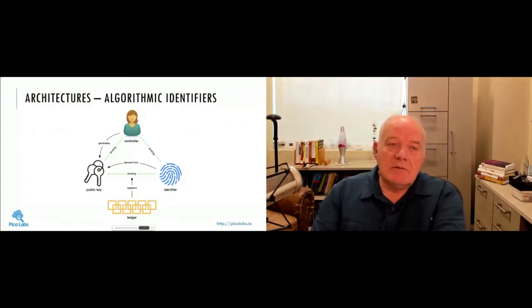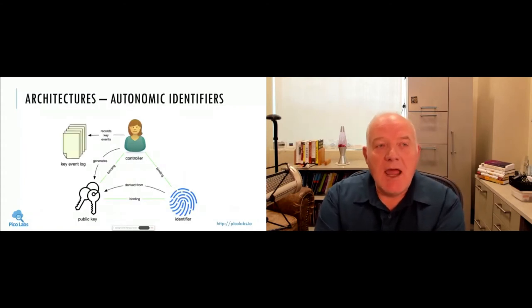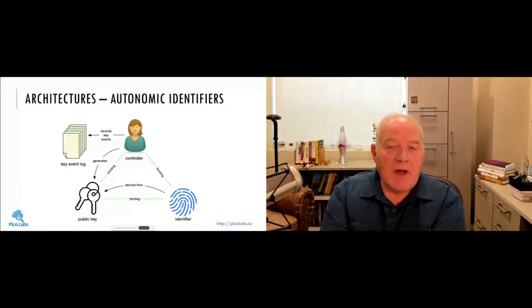And then finally, the primary thing we want to talk about today is this idea of autonomic identifiers. In this case, the identifier and the keys are self-certifying, and the person is their own root of trust. I don't have time today to go into all the details, but the idea here is that the identifier is derived from the key, but the source of truth about what that identifier means is held in some cryptographic structure, which I've labeled here as a key event log.